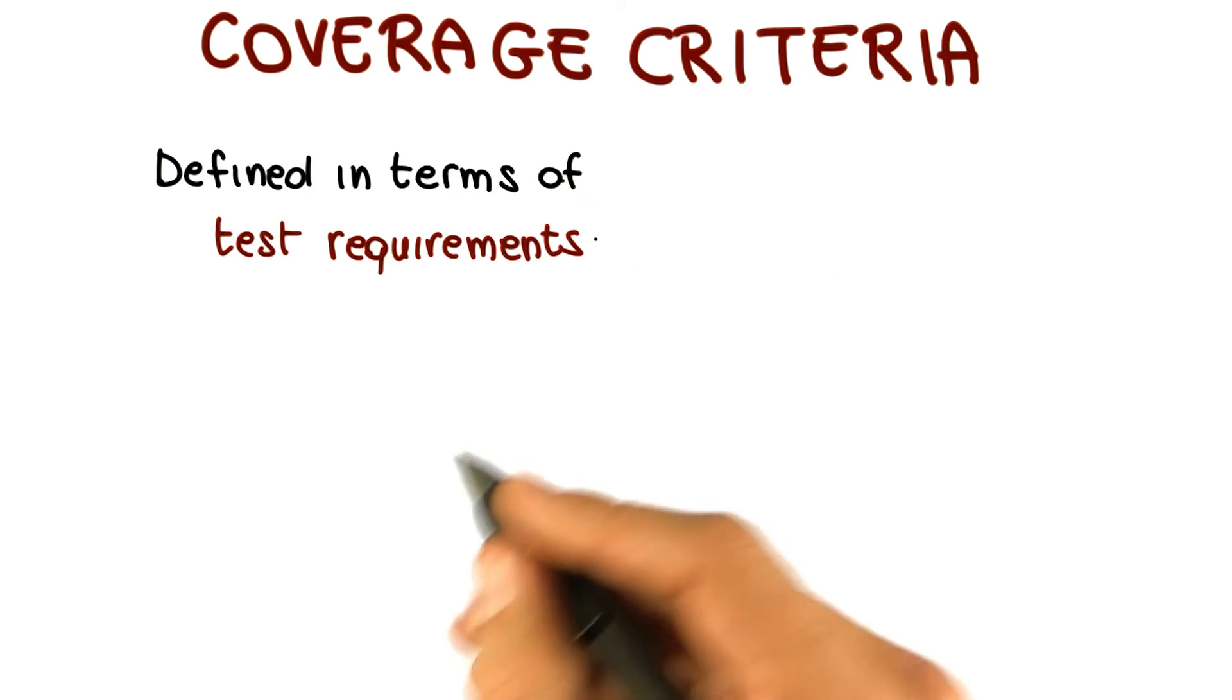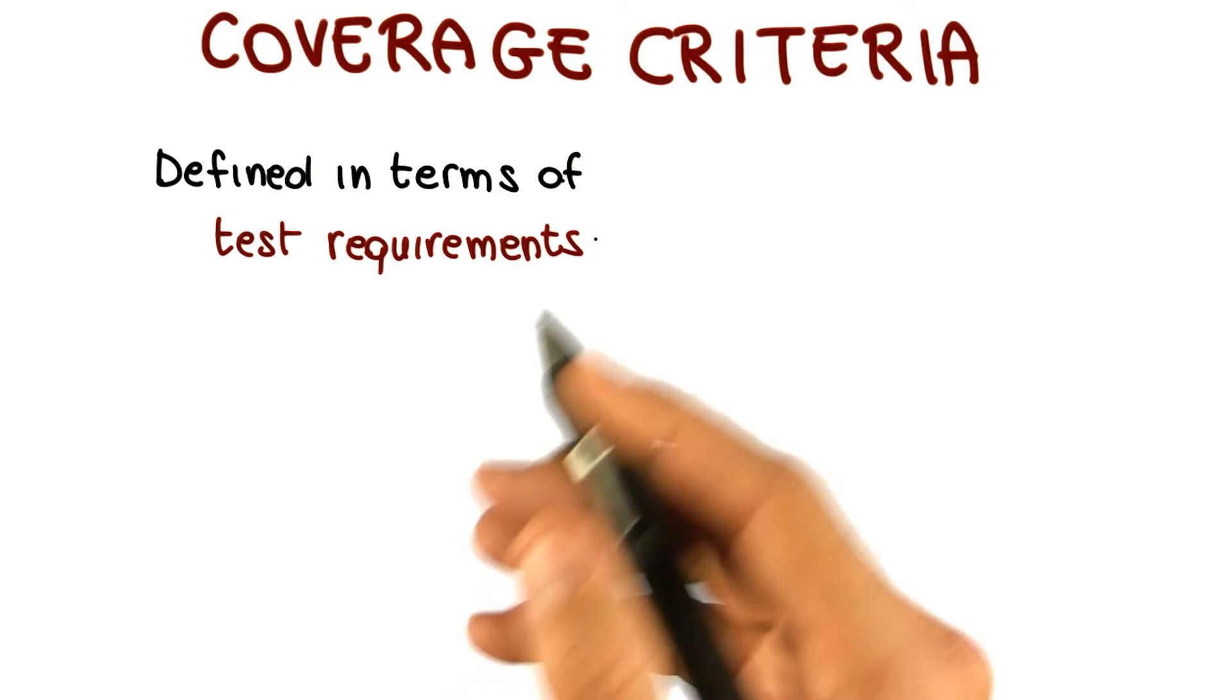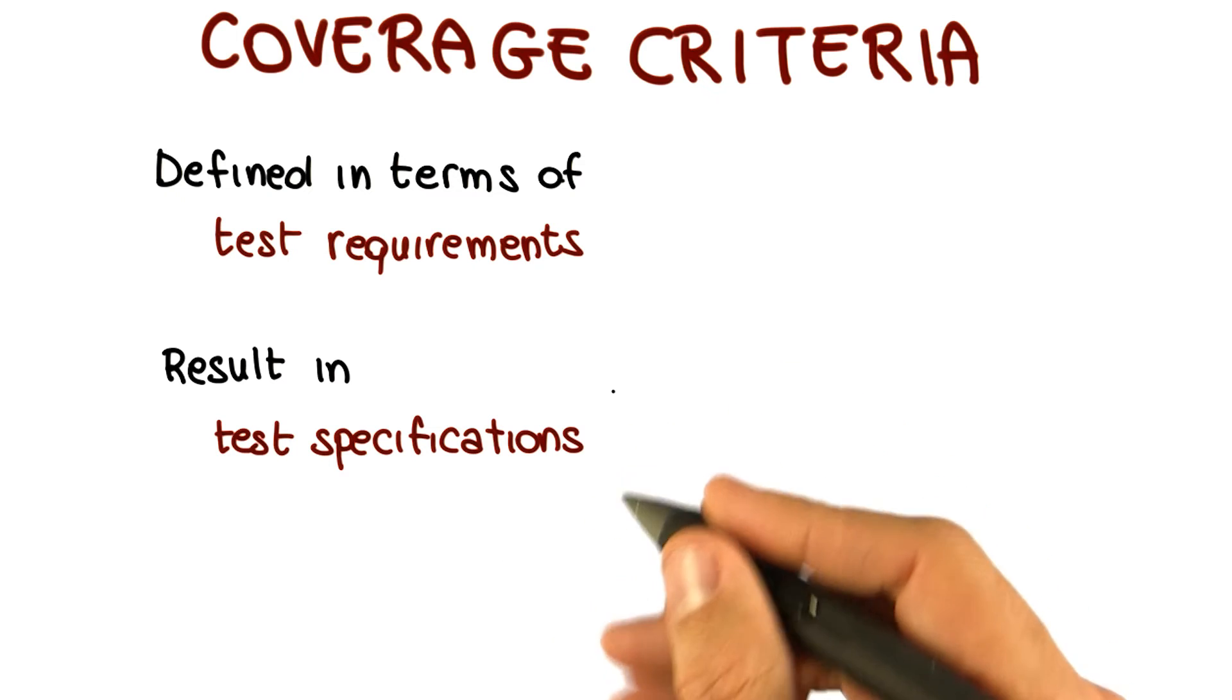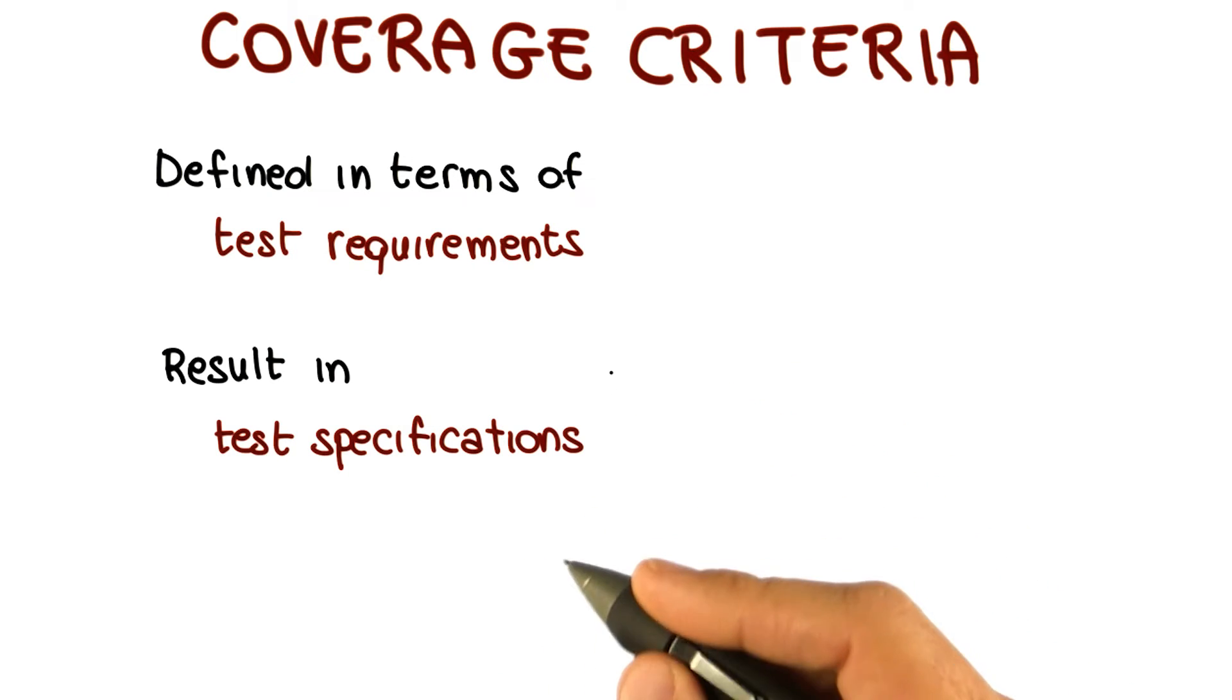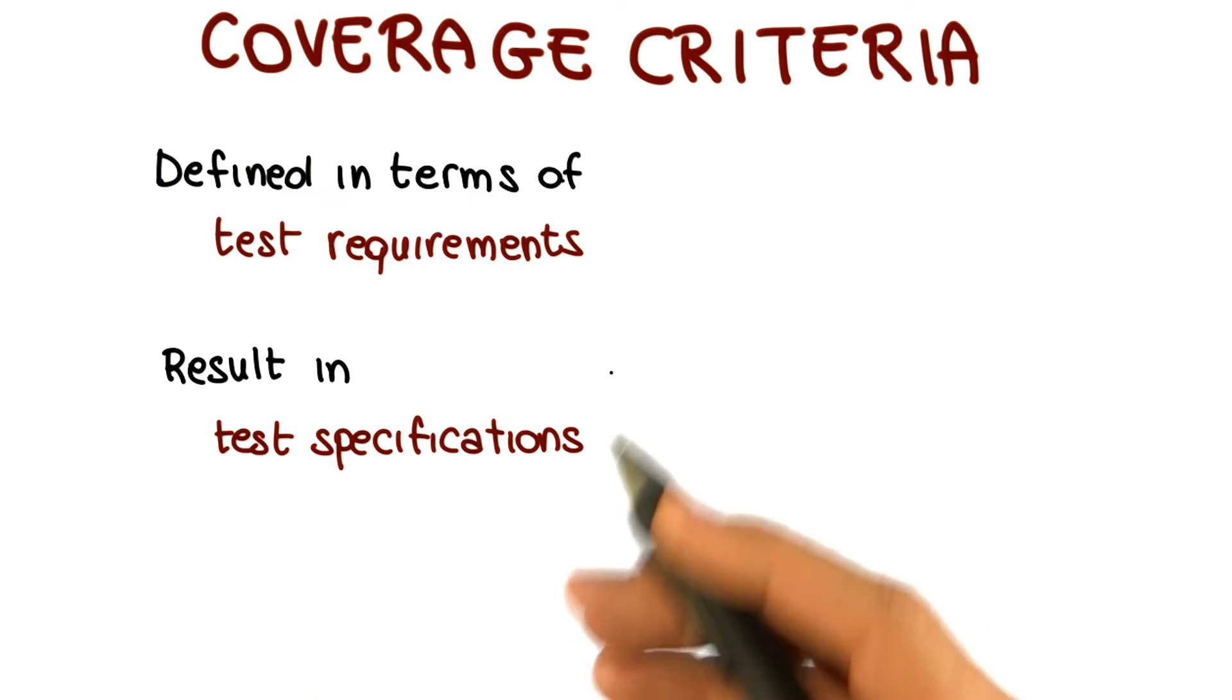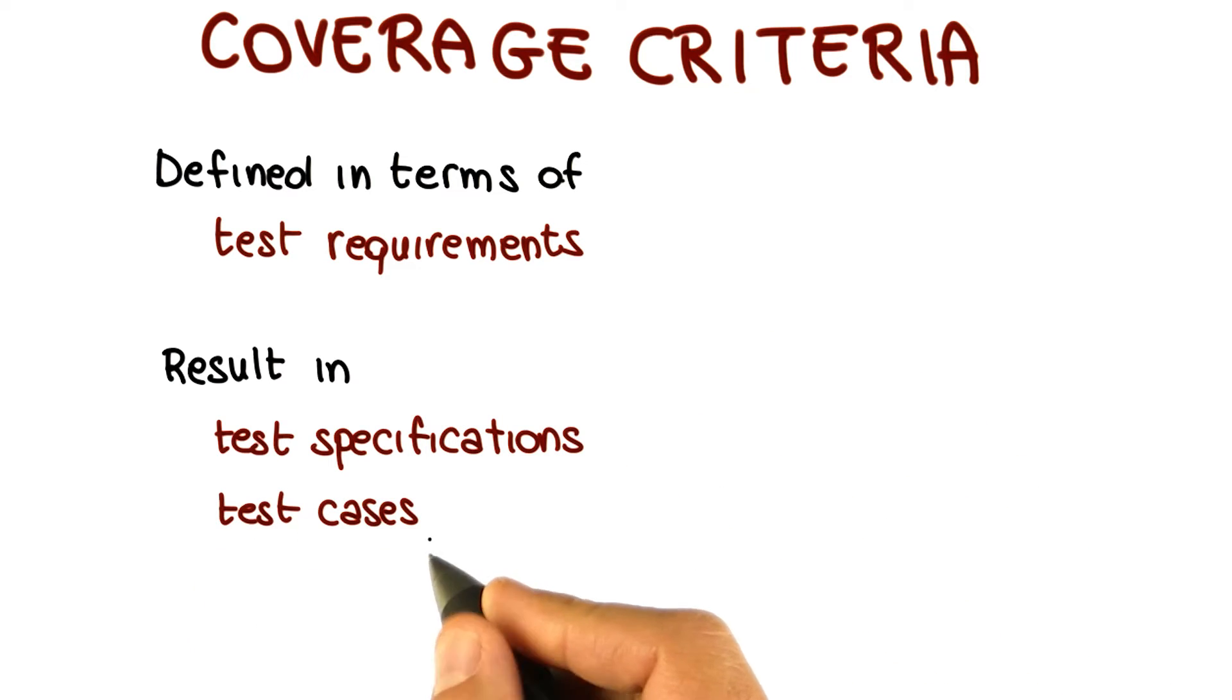And we'll see plenty of examples of that. And normally, when I apply a coverage criterion, my result is a set of test specifications, and we already saw test specifications. Those are basically descriptions, specifications of how the tests should be in order to satisfy the requirements. And they also result in actual test cases, which are instantiations of the test specifications.